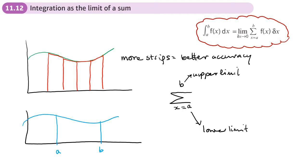Then it has this bit over here, the limit as delta X tends to or approaches zero. Now, what's that all about?